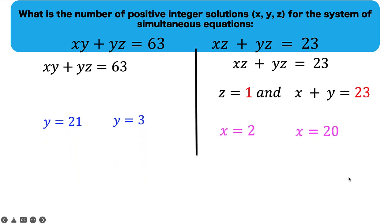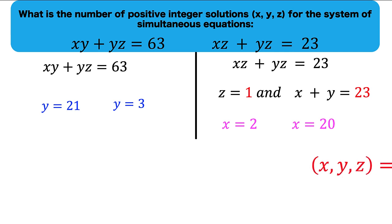So we now have these results: y equals 21, y equals 3, x equals 2, x equals 20. And for the solutions now of these Diophantine equations, we have x, y, z equals 2 for x, 21 for y, and 1 for z.